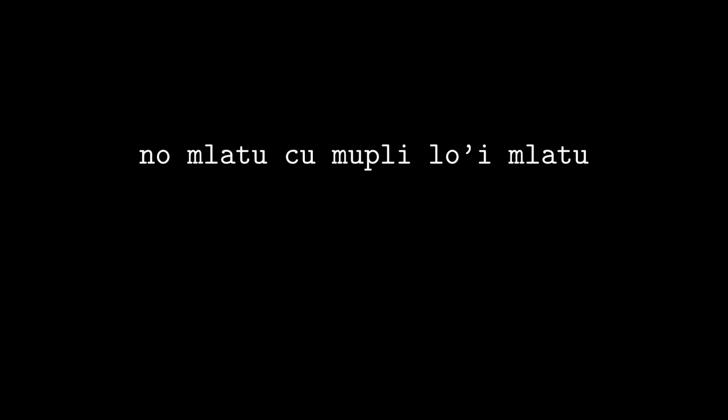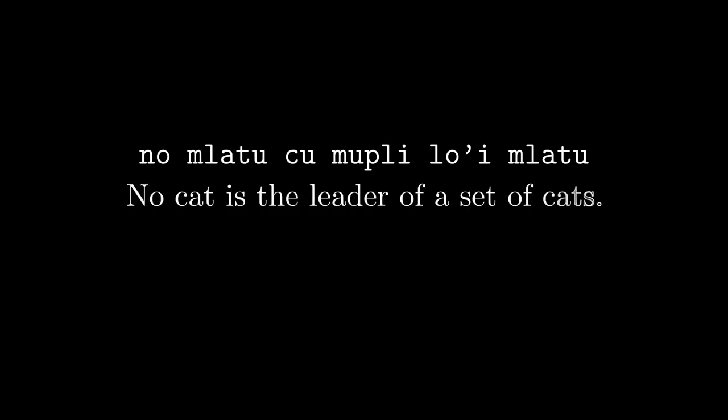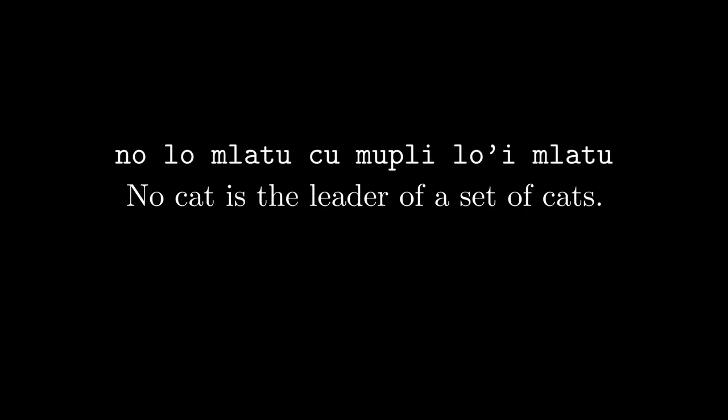One of the examples from the last video contained a quantifier. 'No mlatu' means zero cats — 'no' is the quantifier for zero. But didn't we say that mlatu by itself isn't a sumti and needs something like le or lo to turn it into a sumti? Well, quantifiers also turn a selbri into a sumti, basically with an implied lo: 'no lo mlatu' is equivalent to 'no mlatu'. This new sumti is called a quantified sumti because it contains a quantity.